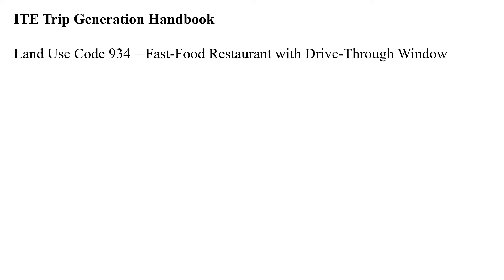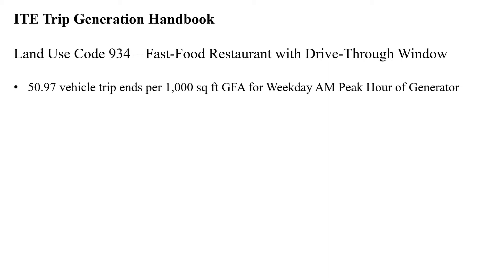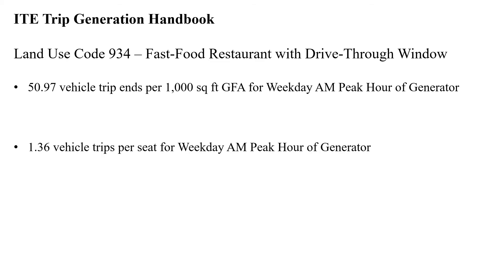We're going to start with the ITE Trip Generation Handbook. This is land use code 934 — a fast food restaurant with drive-thru window. We're looking for the weekday AM peak hour of the generator, per thousand square feet of gross floor area. From the ITE Trip Generation Handbook, that's 50.97 vehicle trip ends per thousand square feet. Similarly, for the seat side, we have 1.36 vehicle trip ends per seat for the weekday AM peak hour of generator.